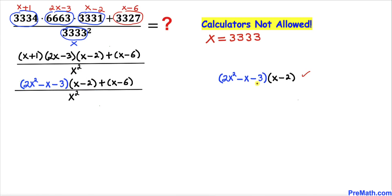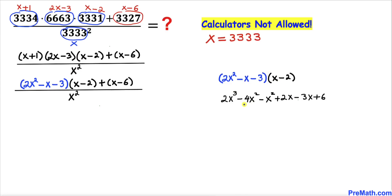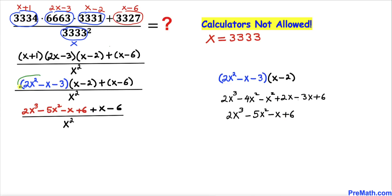Let's multiply these two factors out using distribution, as you can see. In the next step, combining like terms gives us negative 5x squared. Likewise, combining other like terms gives us negative x. Here is the simplified form after multiplication. I have replaced the whole expression with this result, and x minus 6 is brought down as well.